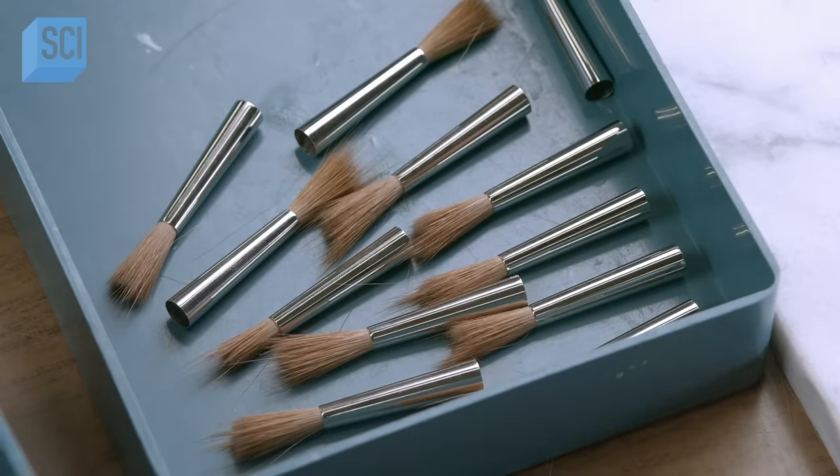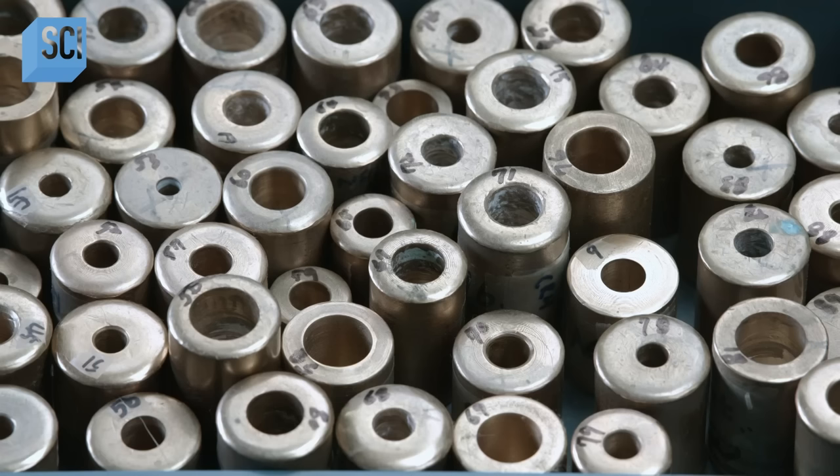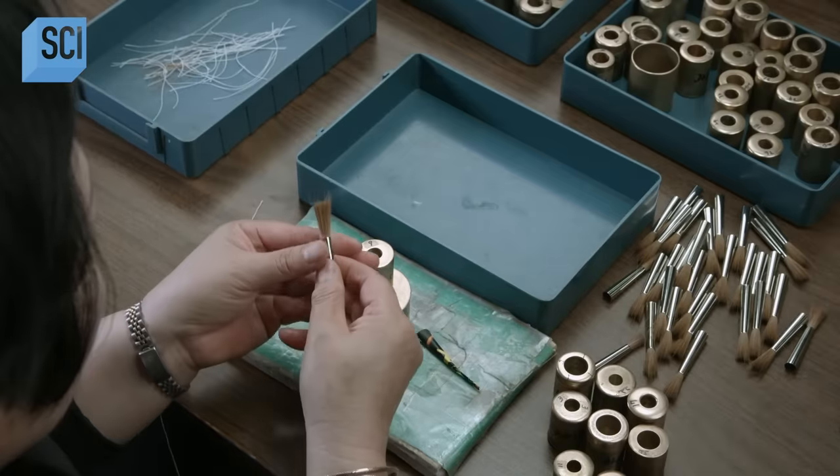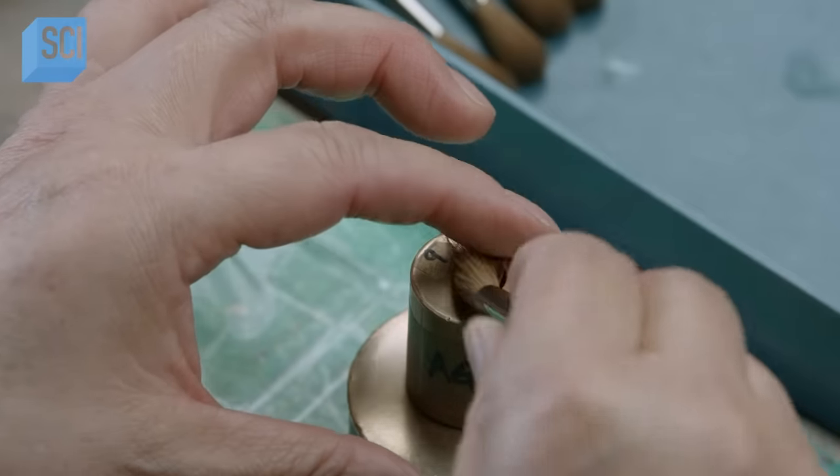Brushes of different shapes require different tensions. The headmaker takes the correct brass mold for the brush shape she's making and inserts the hairs all the way down into the mold cavity.